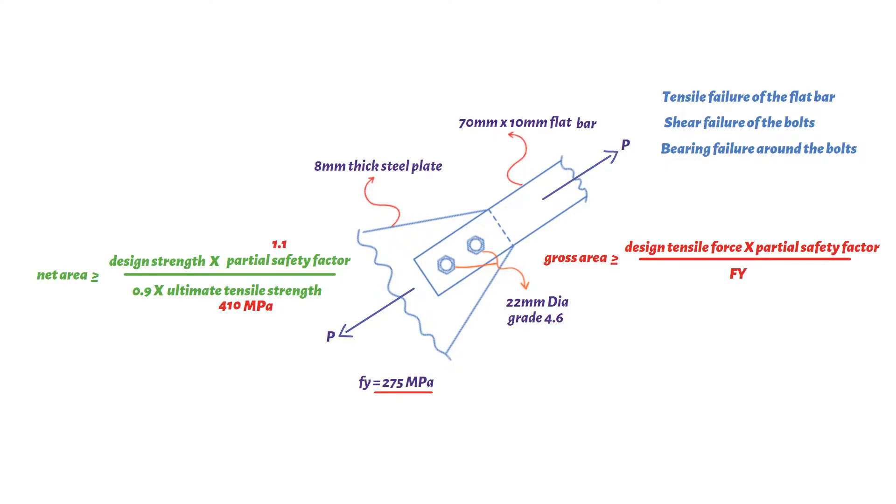Third equation is shear capacity, which equals 0.6 times ultimate strength of bolt multiplied by the area of the bolt divided by partial safety factor 1.25.